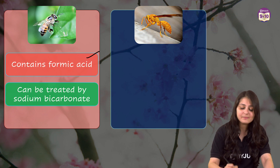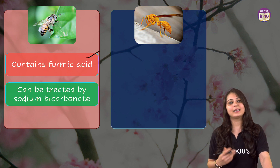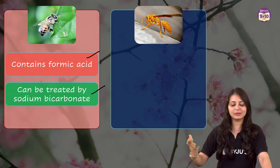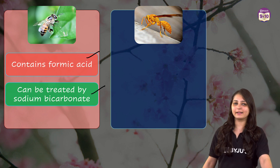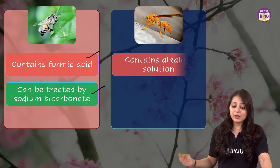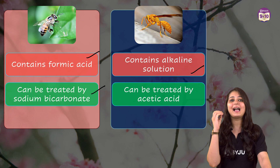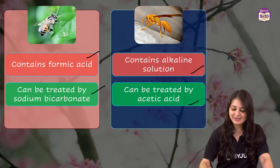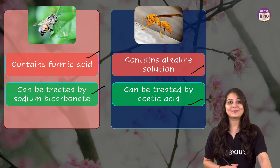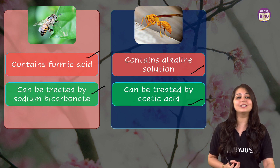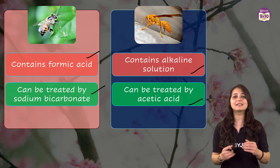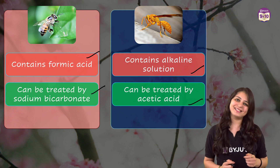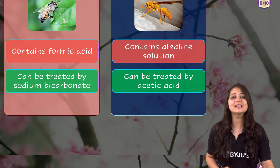Just to summarize: the bee sting contains formic acid, that can be neutralized by using baking soda, that is sodium hydrogen carbonate or sodium bicarbonate. Wasp sting contains an alkaline solution that can be neutralized by using acetic acid. See how important knowledge is — it actually helps us understand the world around us and make informed decisions.